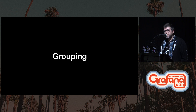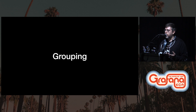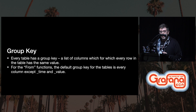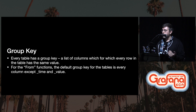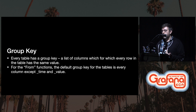Grouping is the next function I'd like to talk about. This becomes really valuable in data exploration when looking at issues, triaging problems — being able to group your data in arbitrary dimensions and compare it against each other can be really valuable. Every table that exists in Flux comes back with a group key, which is a list of columns for which every row has the same value. For the from function, the default group key for tables is every column except for time and value, but you can also specify your own group keys.